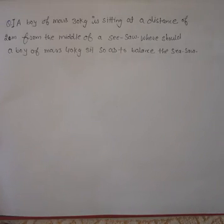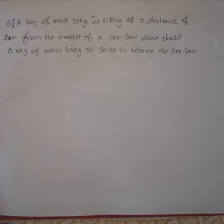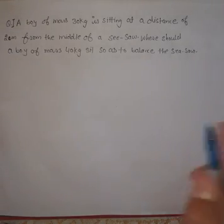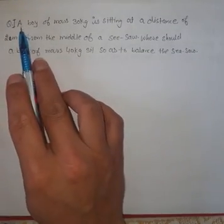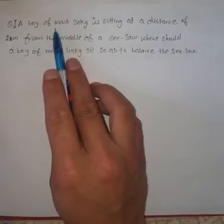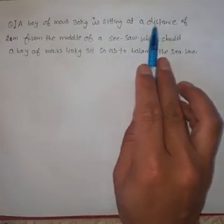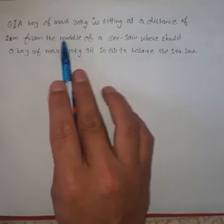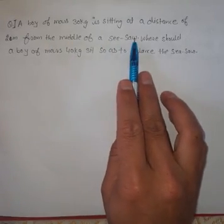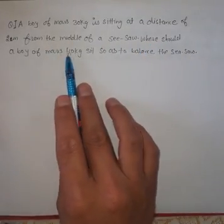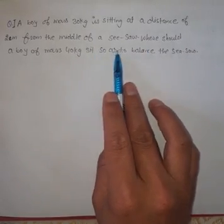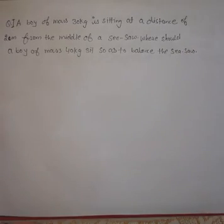Hello everyone, students, today we are going to learn some numericals based on our very first chapter: turning forces. The first question is: a boy of mass 30 kilogram is sitting at a distance of 2 meters from the middle of a seesaw. Where should a boy of mass 40 kilograms sit so as to balance the seesaw?